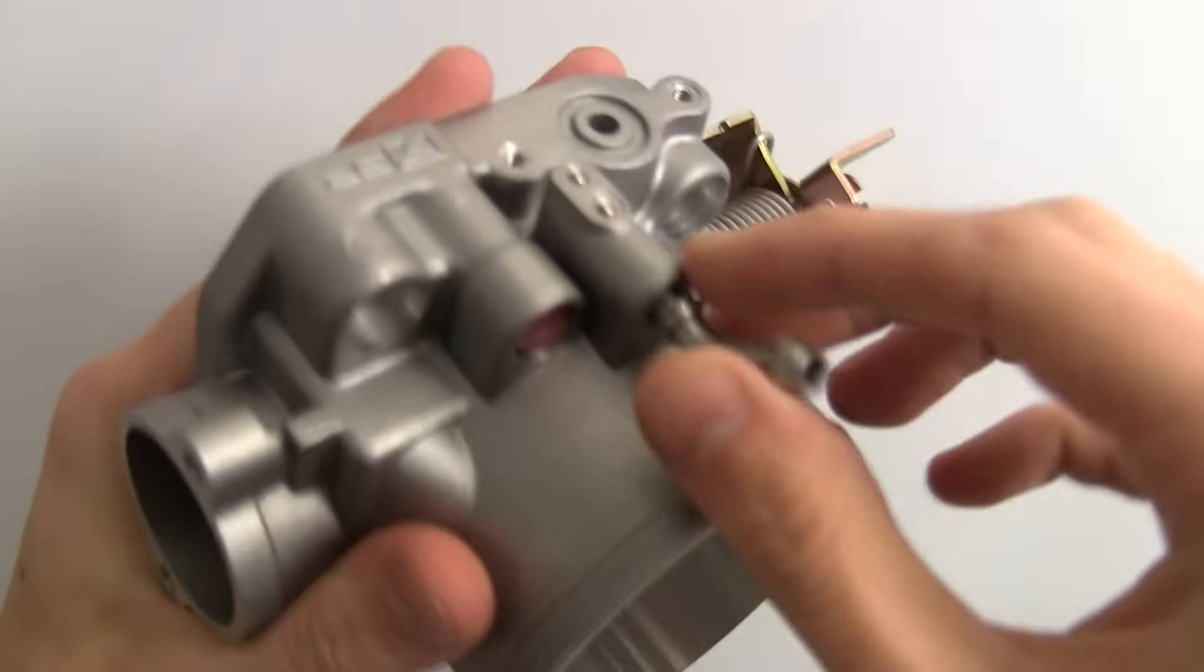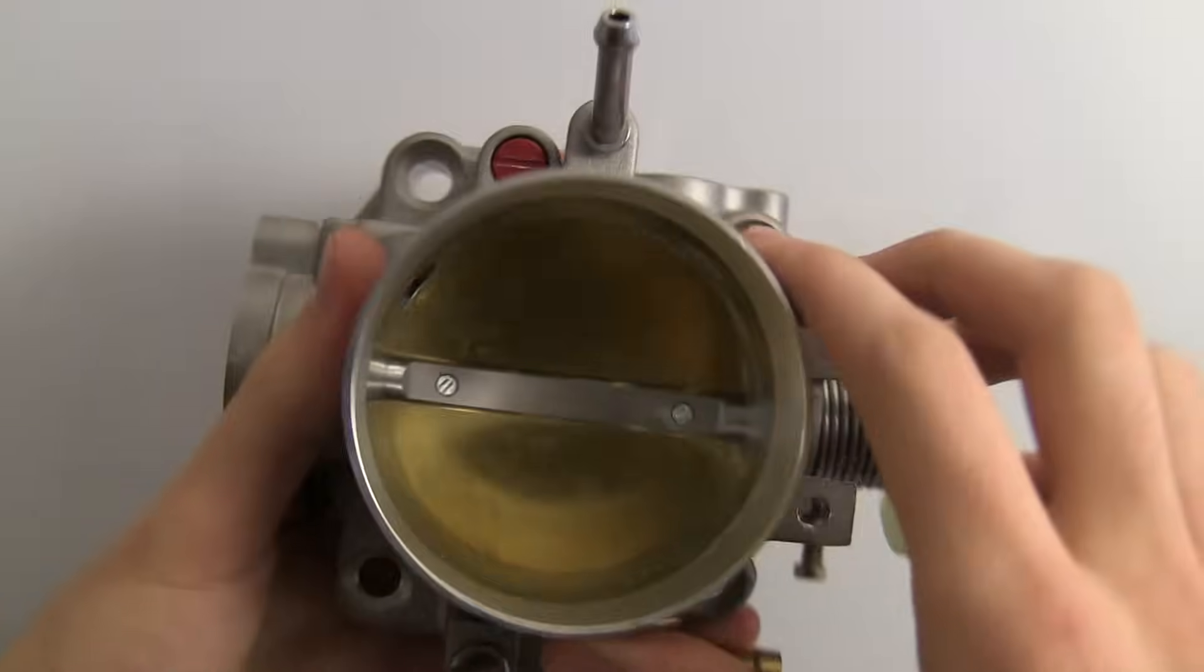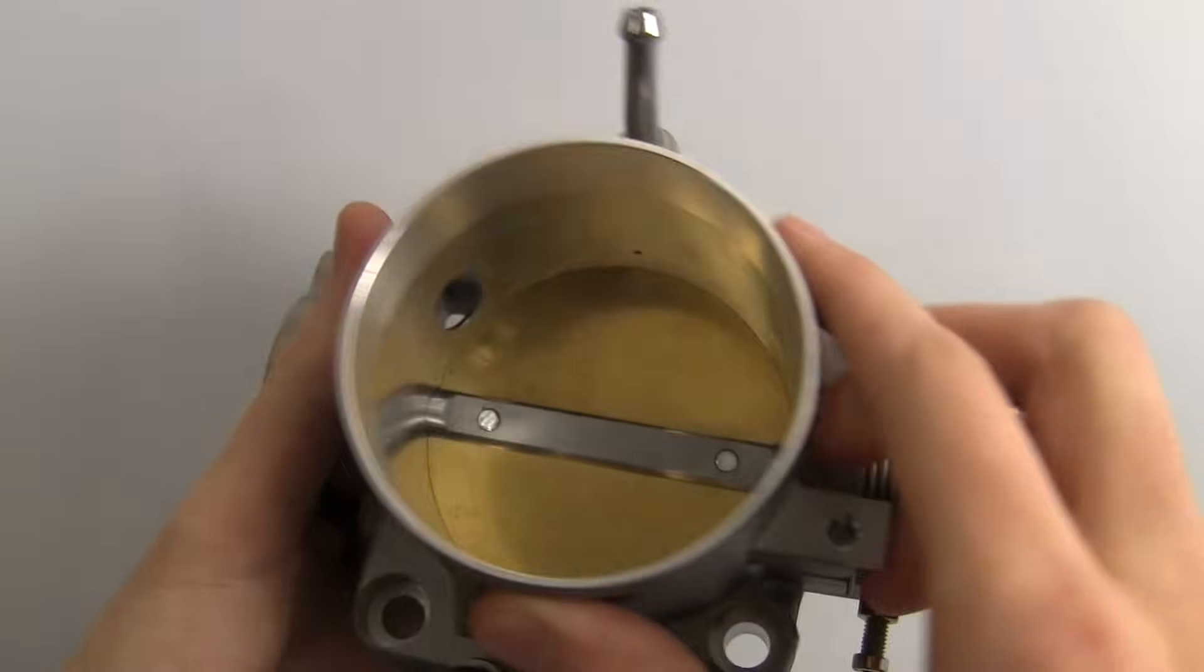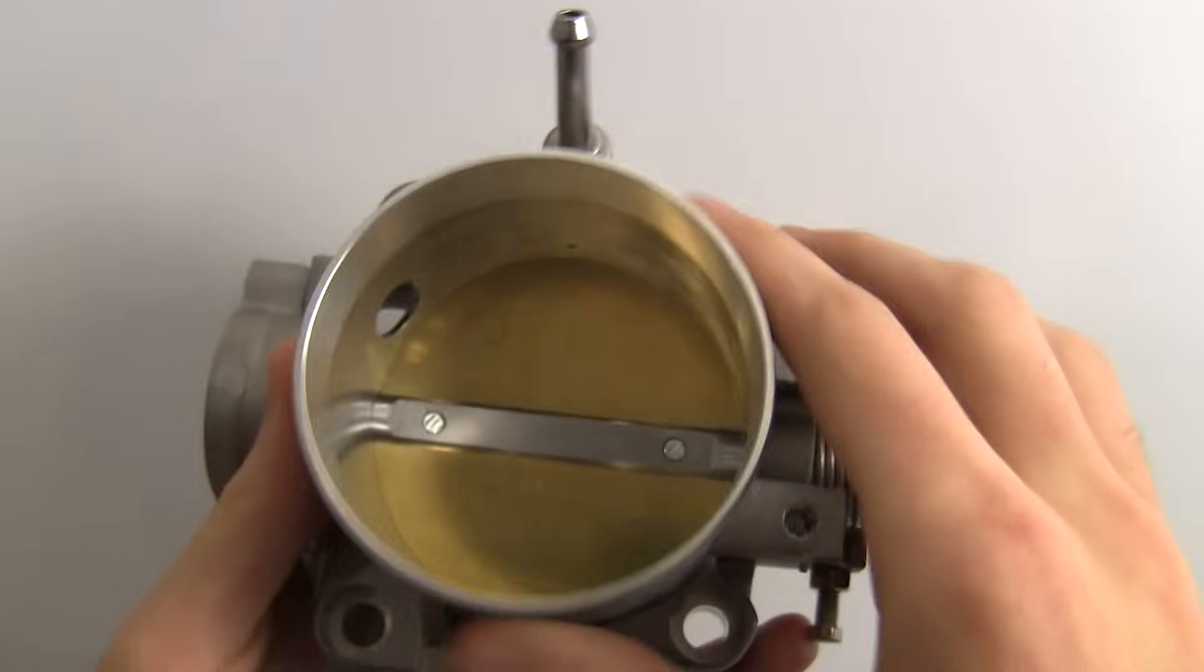And then on top of the throttle body you can see this vacuum line and the little hole there which it's feeding to and this is for emissions control. Some vehicles may or may not be using this feature of it.